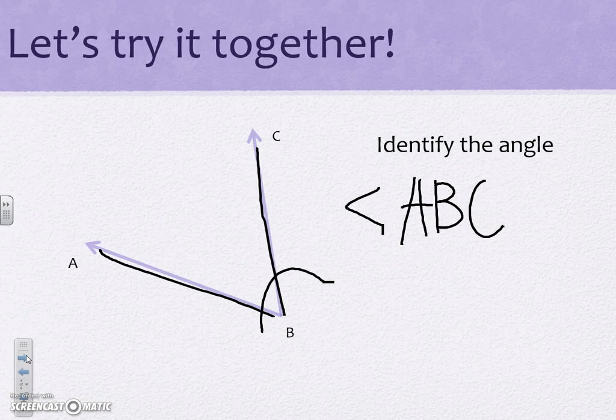And if you think about what we learned in class it should be pretty easy for us to tell that this is an acute angle because it is smaller than 90 degrees.